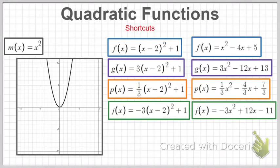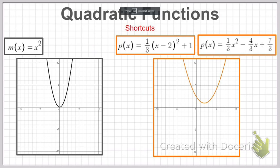This is shortcuts part two. We already covered two types of functions — these are just standard forms of those. In this video we're going to look at the one-third and negative three — those are the only differences between these functions, the a values. Looking at the mother function compared to the one-third version, this one is clearly fatter. The one-third makes the function wider; it's taking all the y-values and lowering them to one-third.